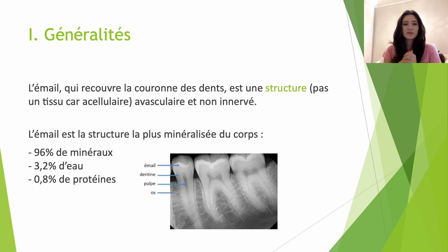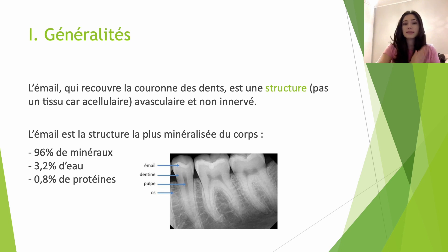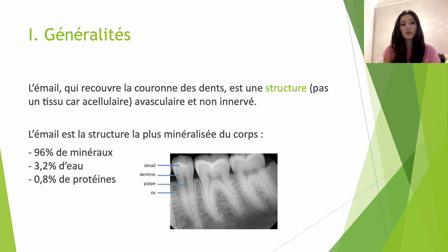Tout d'abord, ce qu'il faut savoir, c'est que l'émail est une structure qui va recouvrir la couronne de la dent. On dit que c'est une structure et non pas un tissu comme par exemple la dentine ou la pulpe dentaire, car l'émail est acellulaire, c'est-à-dire qu'il ne contient aucune cellule. L'émail est également avasculaire, c'est-à-dire qu'il ne contient pas de vaisseau sanguin, et non innervé, c'est-à-dire qu'il ne contient pas de nerfs.